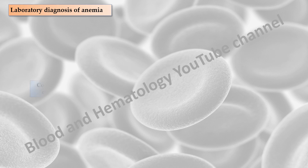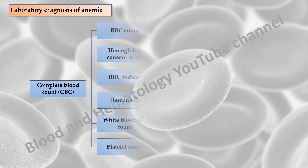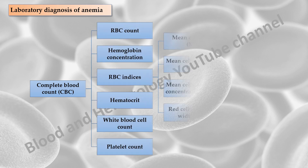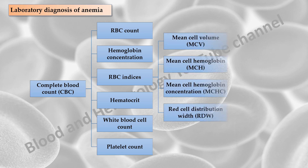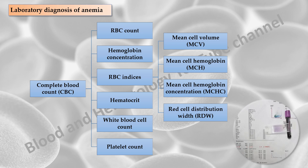To detect the presence of anemia, the medical laboratory professional performs a complete blood count using an automated hematology analyzer to determine the erythrocyte count, hemoglobin concentration, hematocrit, erythrocyte indices, white blood cell count and platelet count. The erythrocyte indices include the mean cell volume, mean cell hemoglobin, and mean cell hemoglobin concentration. The most important of these indices is the MCV, a measure of the average RBC volume in femtoliters. Automated hematology analyzers also provide the red cell distribution width, an index of variation of cell volume in a red blood cell population.